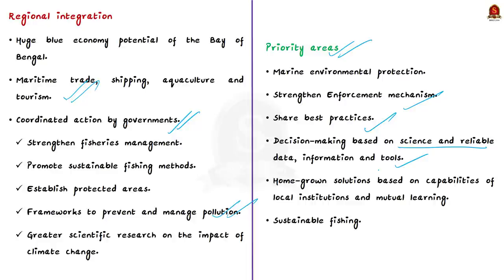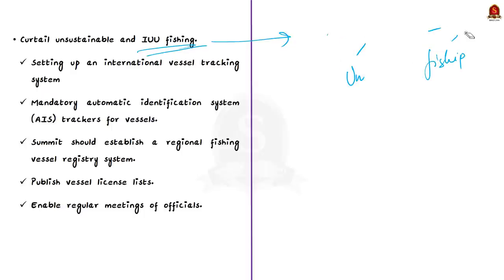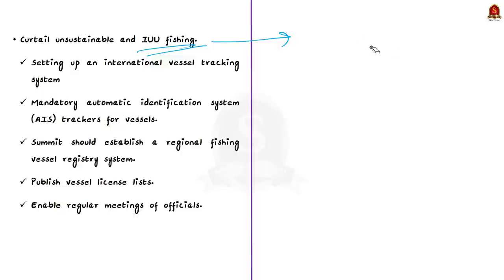Regarding the upcoming BIMSTEC Summit, the author says it must mandate officials to come up with measures to curtail unsustainable as well as IUU fishing — that is, illegal, unreported, and unregulated fishing. BIMSTEC countries could set up an international vessel tracking system and make it mandatory for vessels to be equipped with automatic identification system trackers. The summit should also establish a regional fishing vessel registry system and publish vessel license lists to help identify legal vessels. Proper information sharing is necessary, and regular meetings of officials supported by scientists and experts should be enabled to tackle illegal and unsustainable fishing. The conclusion is: BIMSTEC must arise, awake, and act before it is too late.